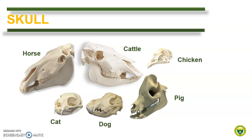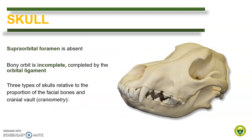Aside from the size and shape, we can identify the animal based on the anatomical features of the skull. The very obvious feature of a dog's skull is the canine teeth. As you recall from your gross vet anatomy, the dog lacks the supraorbital foramen, which is supposed to be located at the frontal bone just above the orbit. This supraorbital foramen is present in all domestic animals except in dogs. The orbit is incomplete, being completed by an orbital ligament in a living animal.